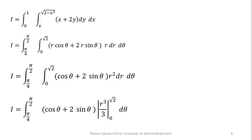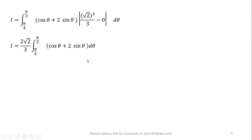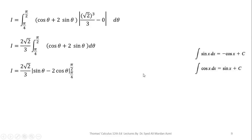The integration of r squared is r cubed over 3, evaluated at the given limits. Applying the limits — upper limit minus lower limit — we get square root of 2 cubed over 3 as a constant factor. Since square root of 2 cubed equals 2 square root of 2, we factor out 2 square root of 2 over 3. We are left with the integral of cos theta plus 2 sin theta from pi/4 to pi/2. Recall that the integration of sine is negative cosine and the integration of cosine is sine.